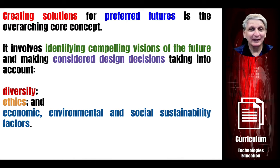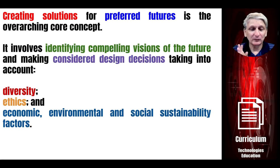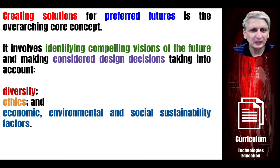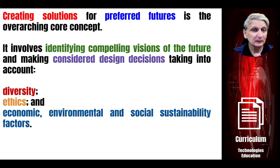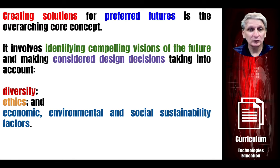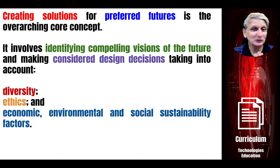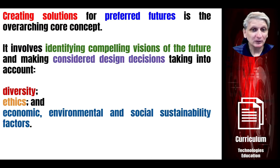Creating solutions for preferred futures is the overarching concept, taking into account diversity, ethics, economic, environmental and social sustainability — essentially making our students responsible for their actions, whether creating a technology product, using a technology, or abusing a technology. For very young students that might be things like using passwords or not hitting their friend with a hammer — relatively simple concepts. But in the upper years of primary we start getting into reasonably complex ethical decision-making: when is it right to download a song off the internet? What's the impact? Who does it harm? Is it ethical? These are things you'll explore with your students.